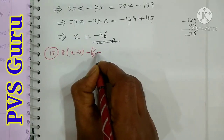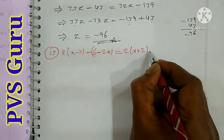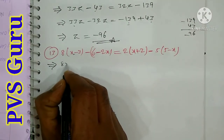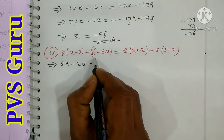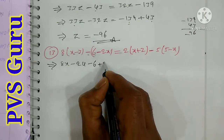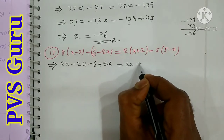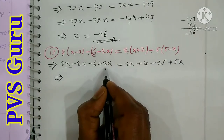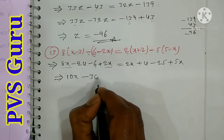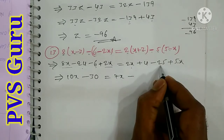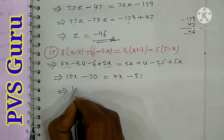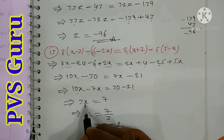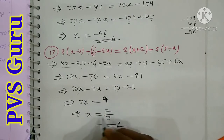Question number 13: 8 into (x minus 3) minus (6 minus 2x) is equal to 2 into (x plus 2) minus 5 into (5 minus x). Expanding: 8x minus 24 minus 6 plus 2x equals 2x plus 4 plus 5x minus 25. Simplifying: 10x minus 30 equals 7x minus 21. So 3x equals 9, giving x equal to 3.